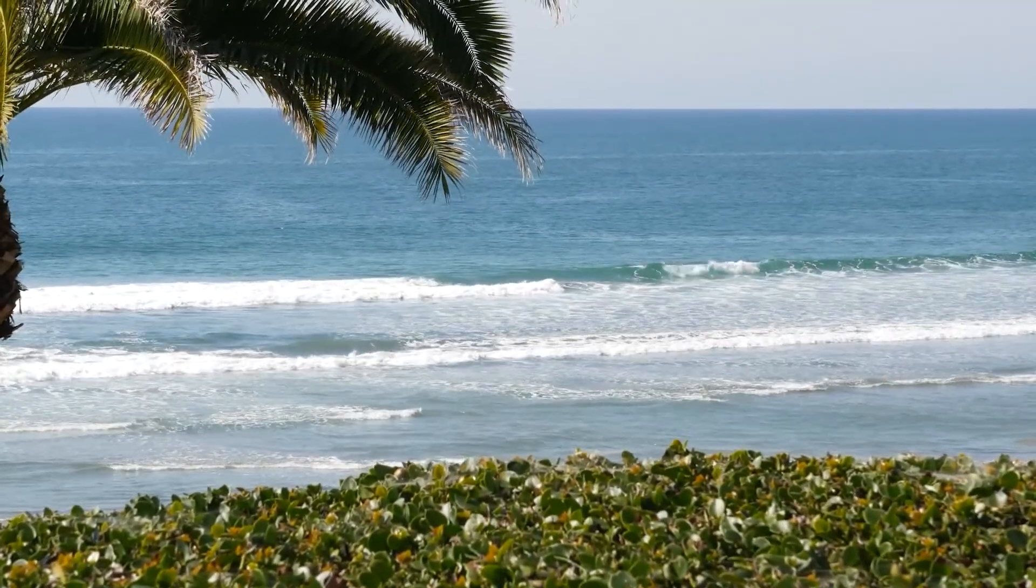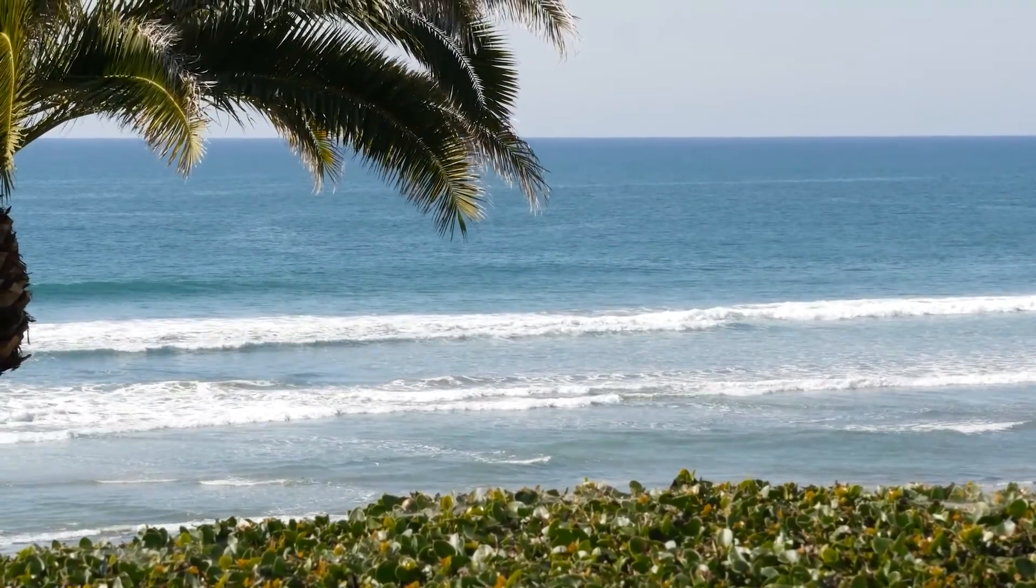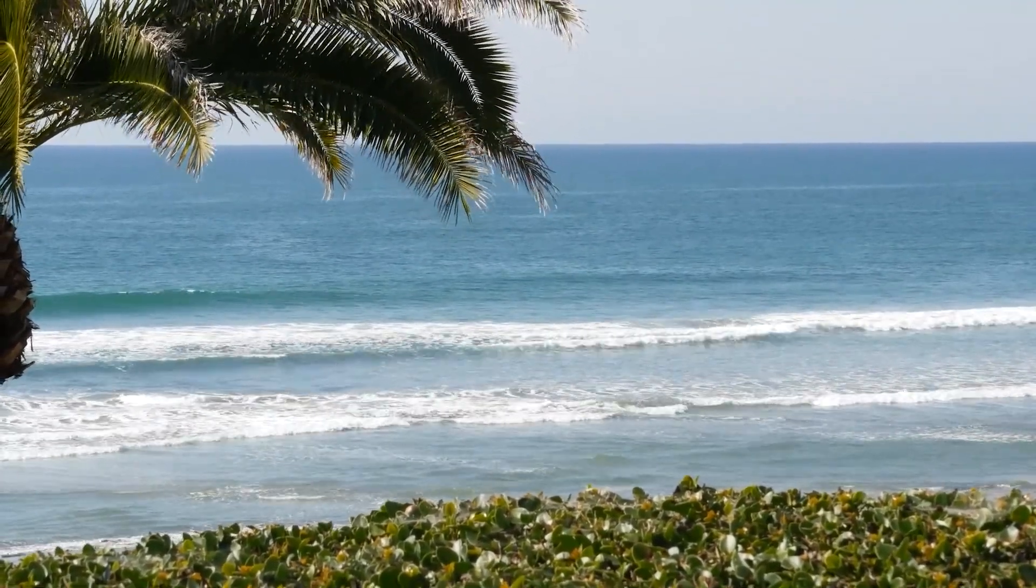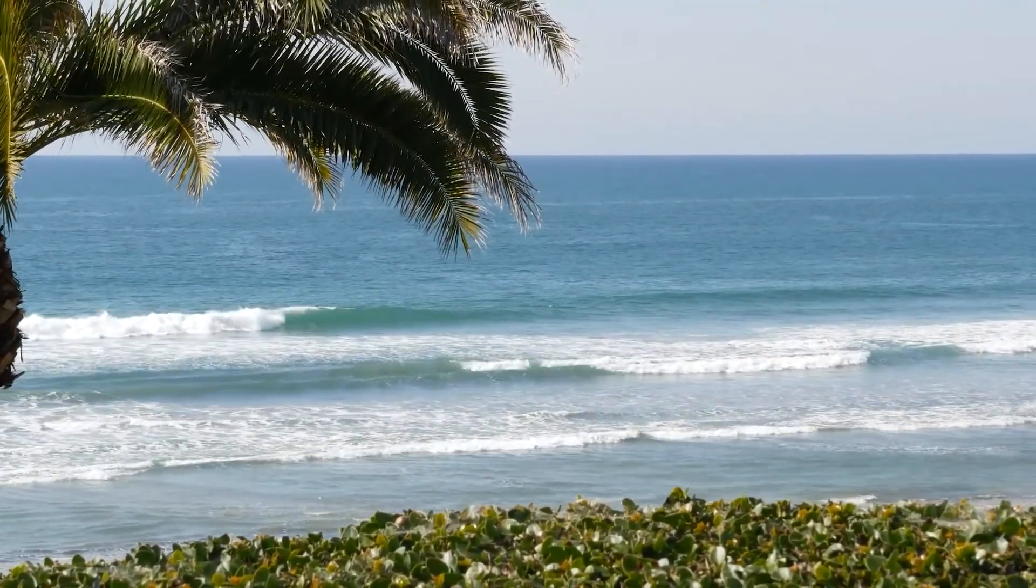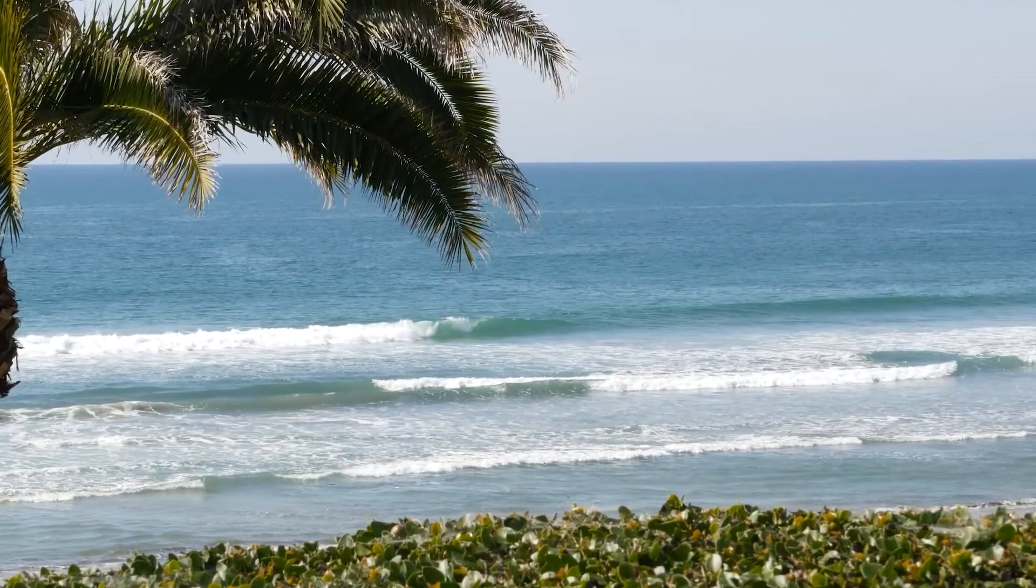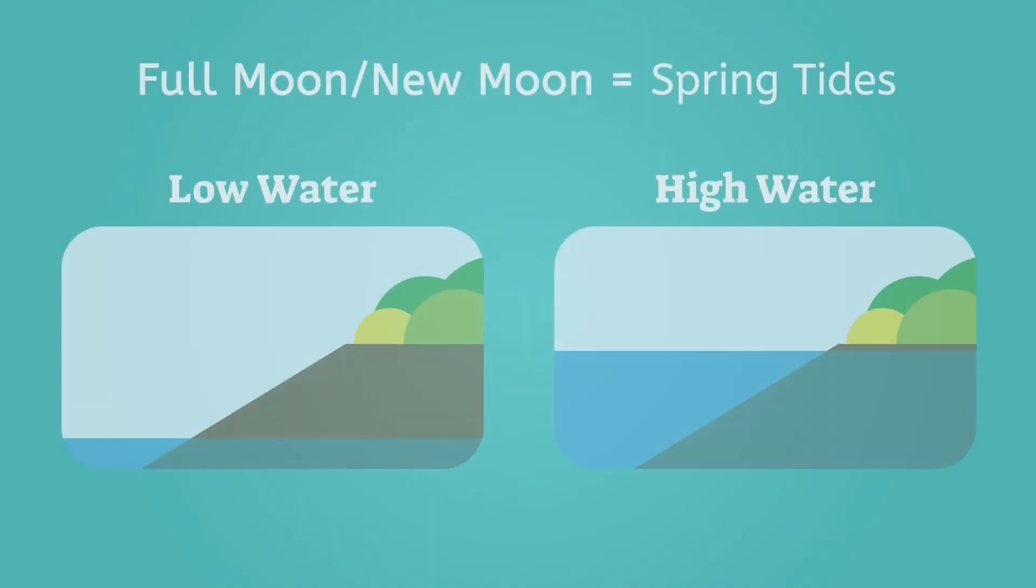The moon does more than just cycle through its phases. As we learned from our previous lesson, the moon's gravitational pull affects the ocean's tides on Earth. The phases of the moon play a significant role in this too. For example, during the full moon and new moon phases, the sun, moon and Earth are aligned, which creates stronger tides known as spring tides. These tides are higher and lower than normal because the gravitational forces of the sun and moon combine.